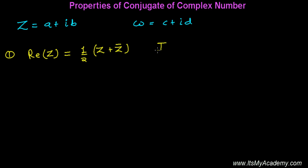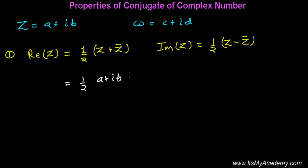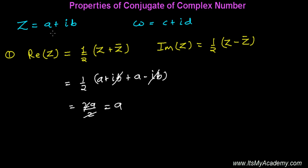Similarly, if you want to find the imaginary part of the complex number, it is again half of the difference of the complex number and its conjugate. Let me show you how this is correct. It is half of (Z + Z̄) = half of (A + iB) + (A − iB). The iB terms cancel, giving twice A divided by 2, which equals A — the real part of the complex number.